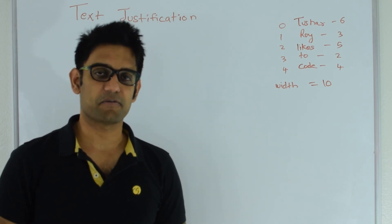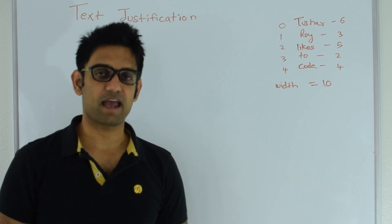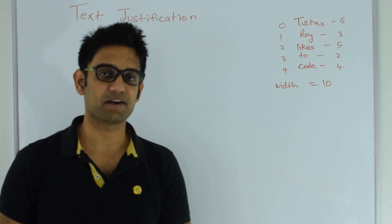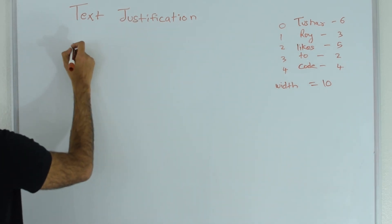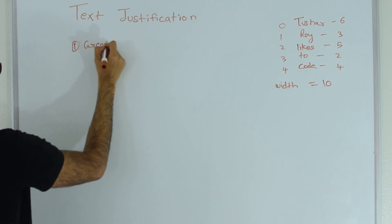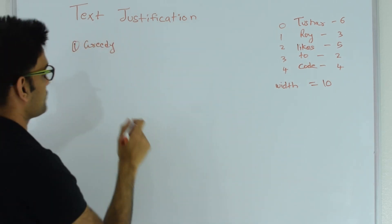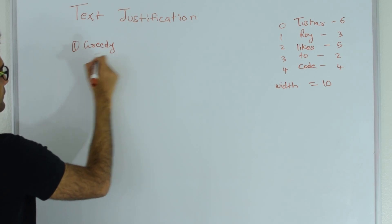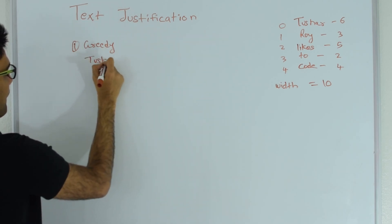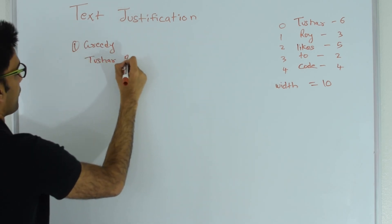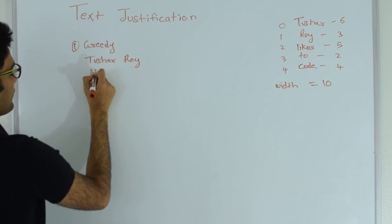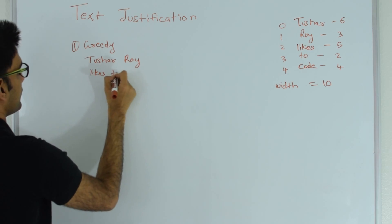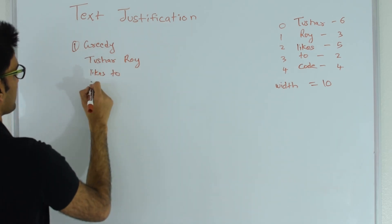First, let's look at a greedy way of doing this. The greedy way says: put as many words as possible on each line, and if the next word cannot fit in this line, go to the next line and continue the process. So the greedy arrangement for this list of strings will be 'Tushar Roy' — a total of 10 characters — then the next line has 'likes to', and then 'code'.